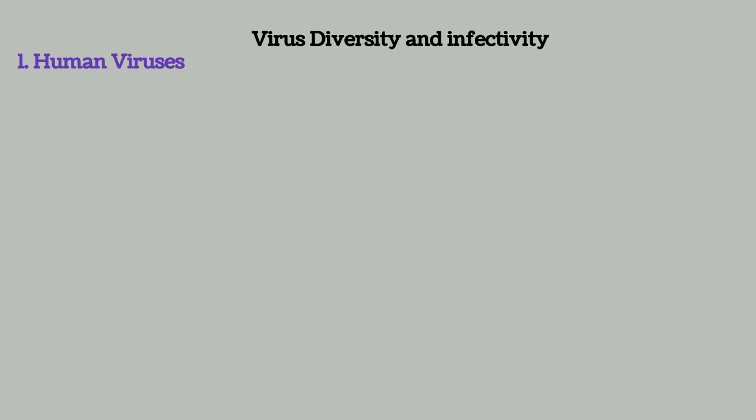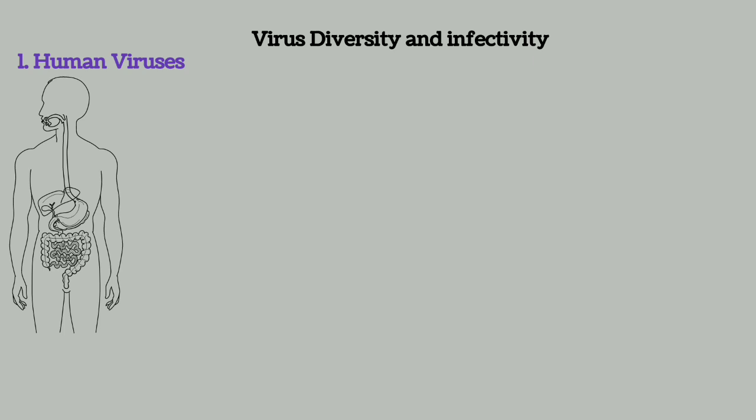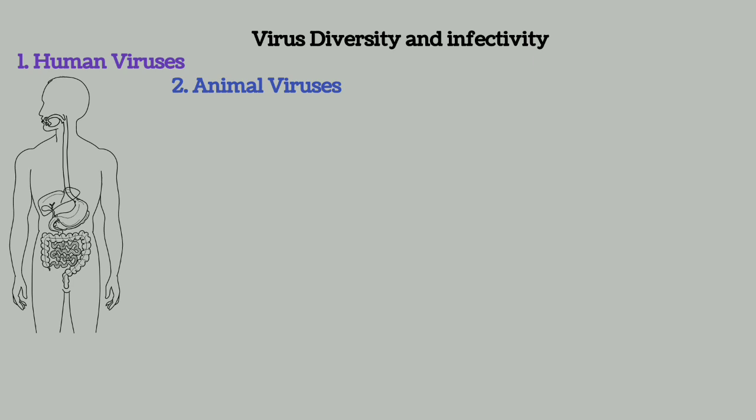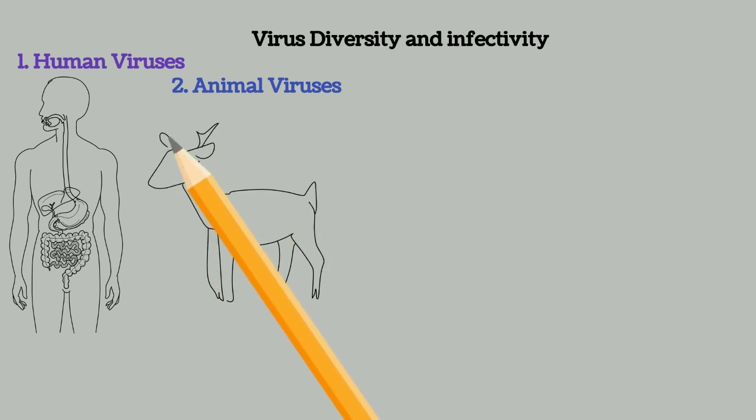One category of virus is the human virus, which infects humans strictly — most especially the HIV virus, the hepatitis virus, Ebola virus, yellow fever virus, and the emerging coronavirus. The second category is viruses that infect animals. Animal viruses can metamorphose or mutate to infect humans, but they are initially animal viruses.